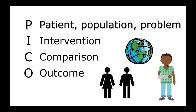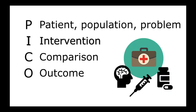P might stand for patients of a certain age or sex, populations who may live in a geographic location, or those with a similar primary problem. I stands for intervention, and this can include therapies, diagnostic tests, or preventative measures.